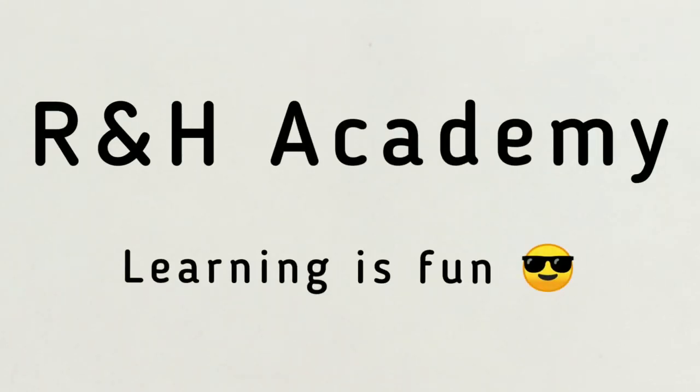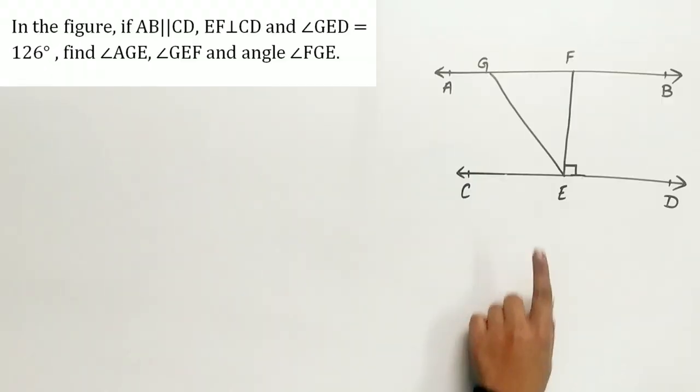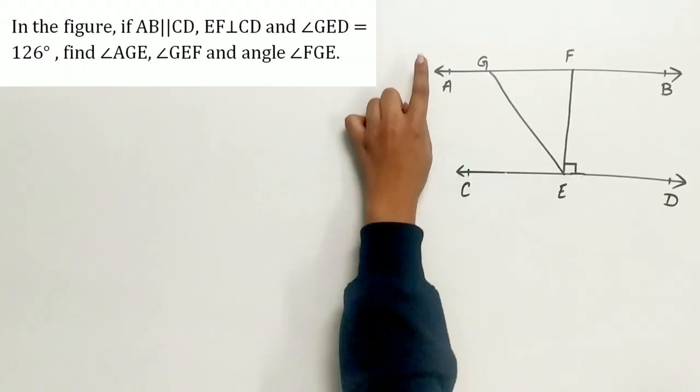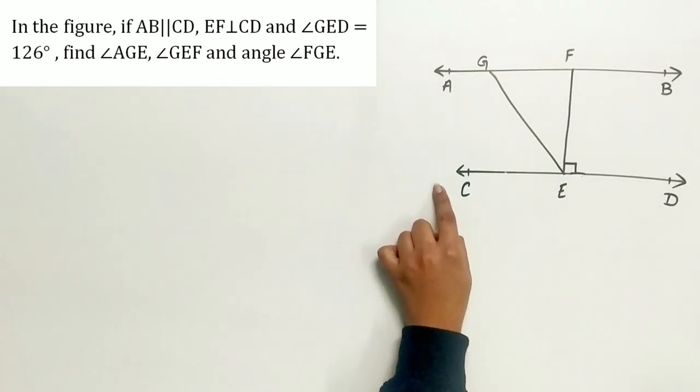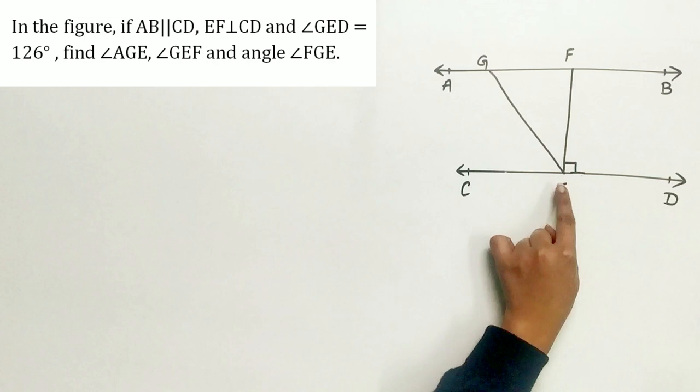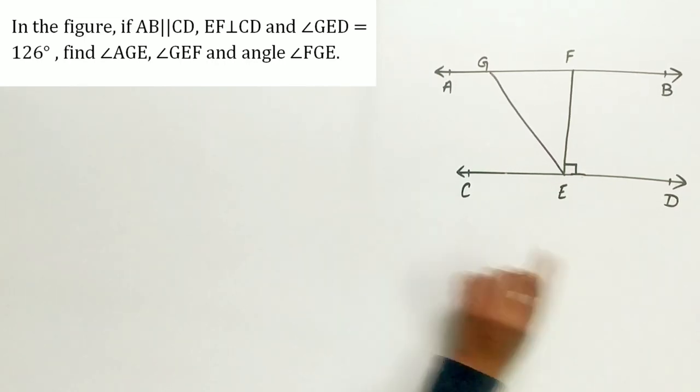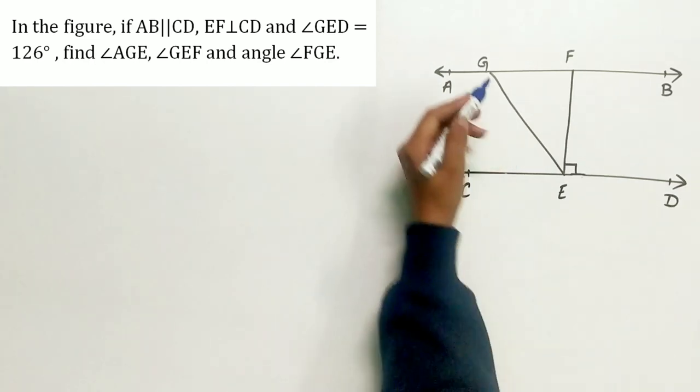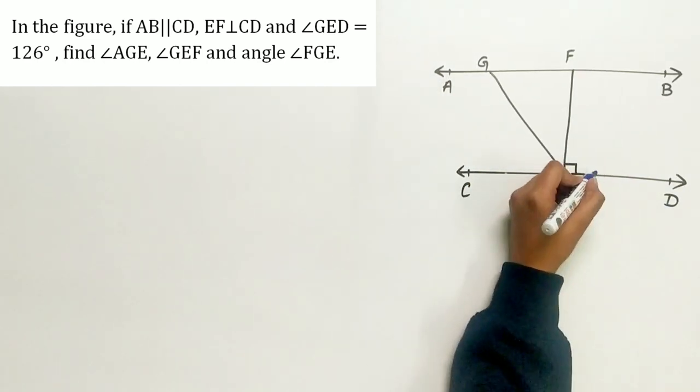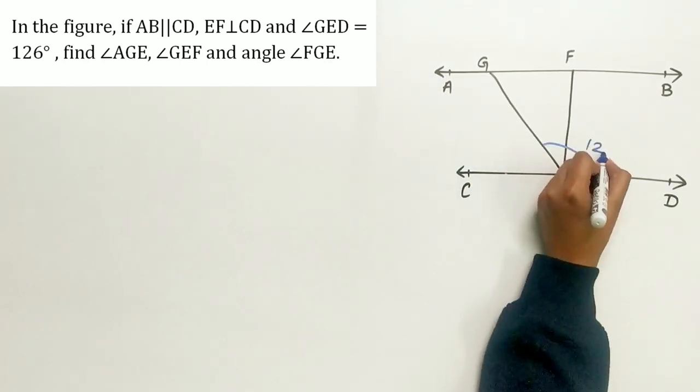Welcome to R&H Academy channel. Question 3 of exercise 6.2 says, in the figure, if AB is parallel to CD,